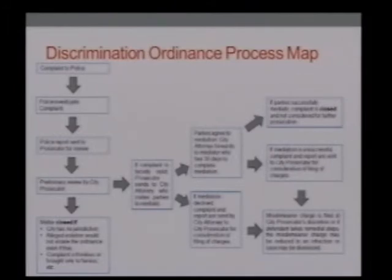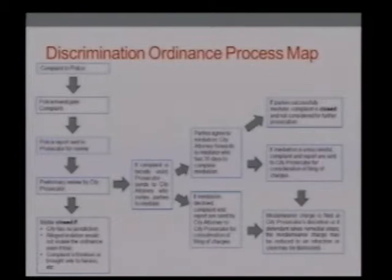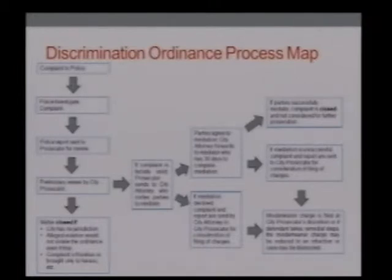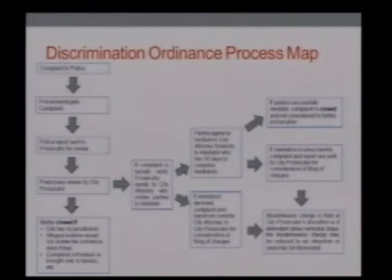If they sit down, work it out, apologize, make a plan — maybe somebody gets some education or they exchange information — and both the complainant and the person complained against work it out, then the complaint is closed. There's no need to move forward. If mediation is unsuccessful or people refuse to mediate, it goes back to the prosecutor, who makes a decision, because it still looks like a misdemeanor that needs to be resolved.